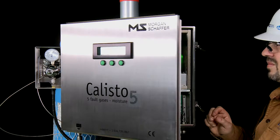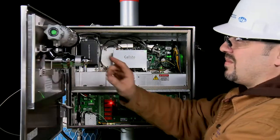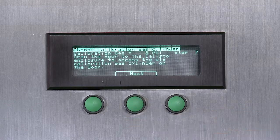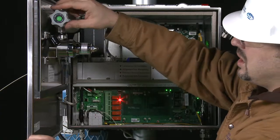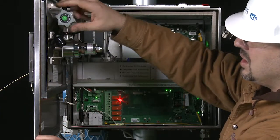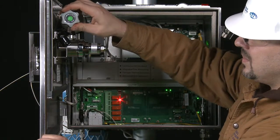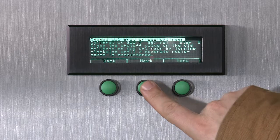Open the Calisto enclosure to access the old calibration gas cylinder on the door and then press Next. Close the shut-off valve on the old calibration gas cylinder until a moderate resistance is encountered and then press Next.